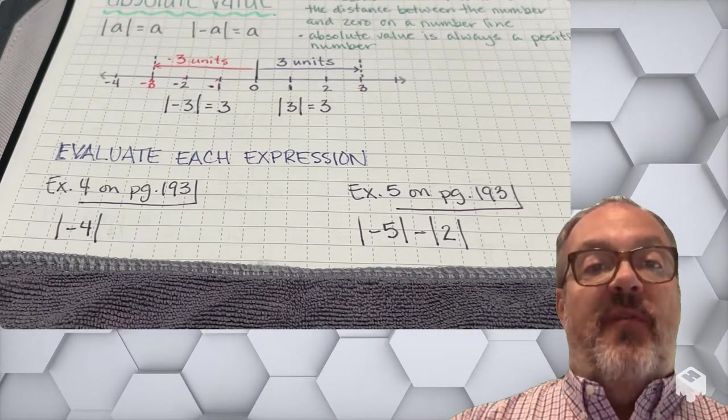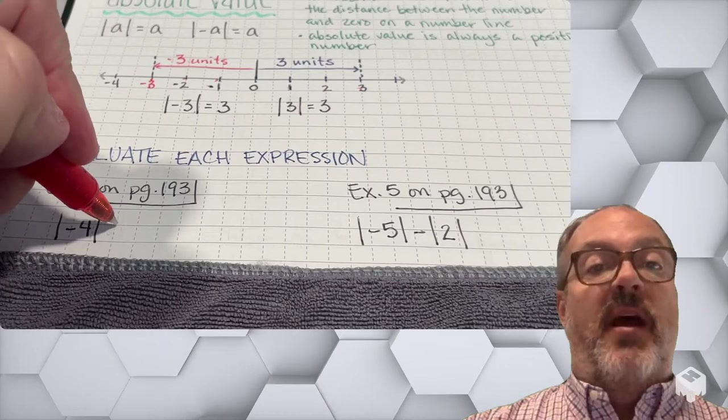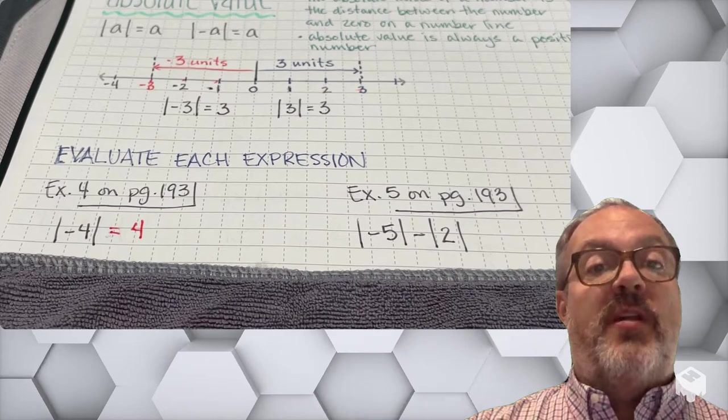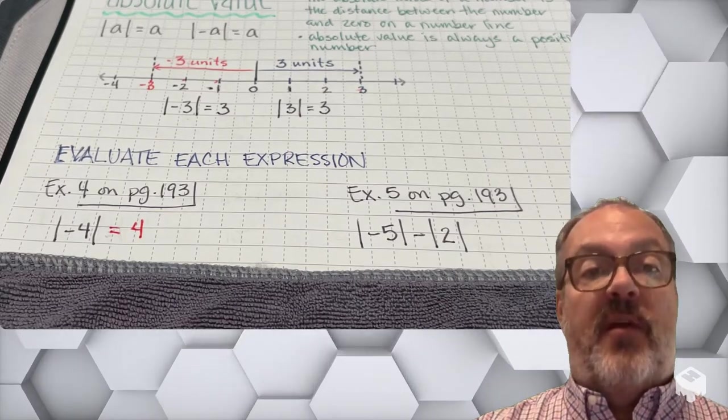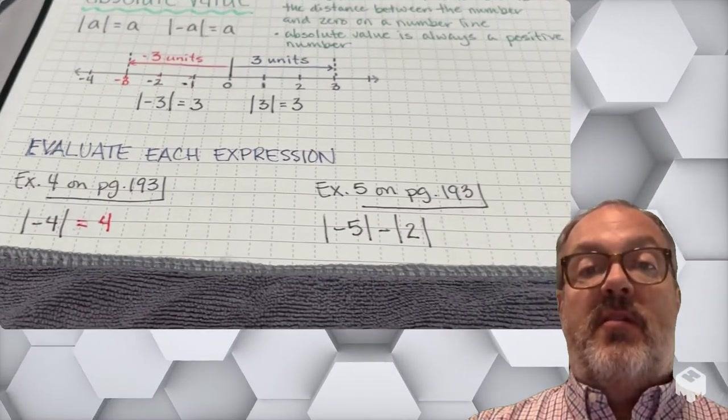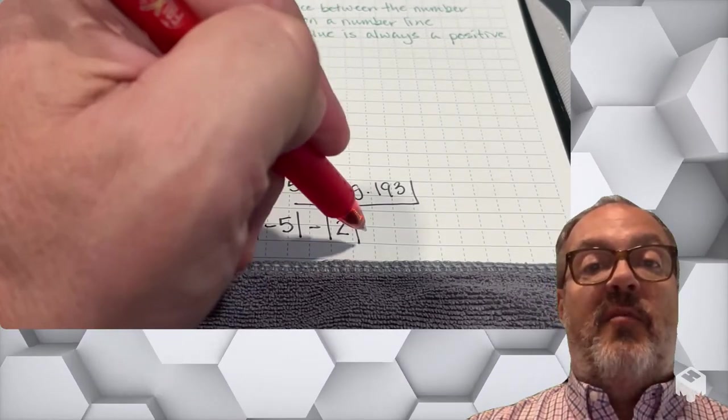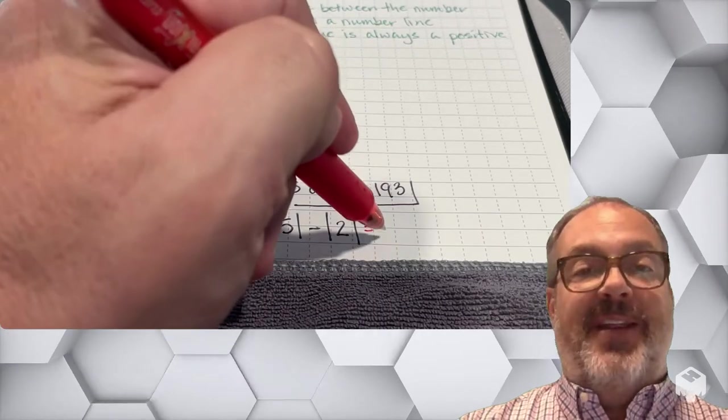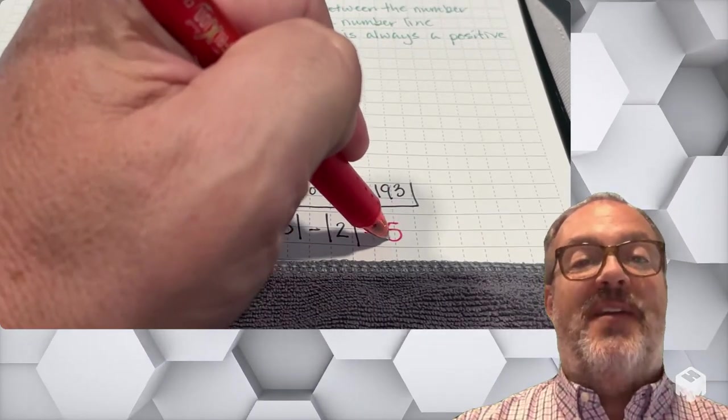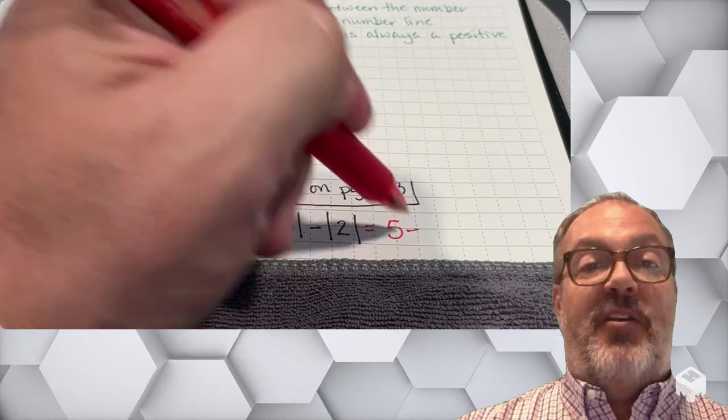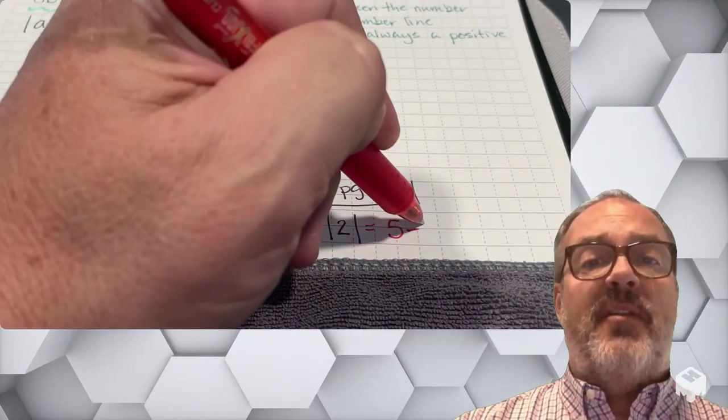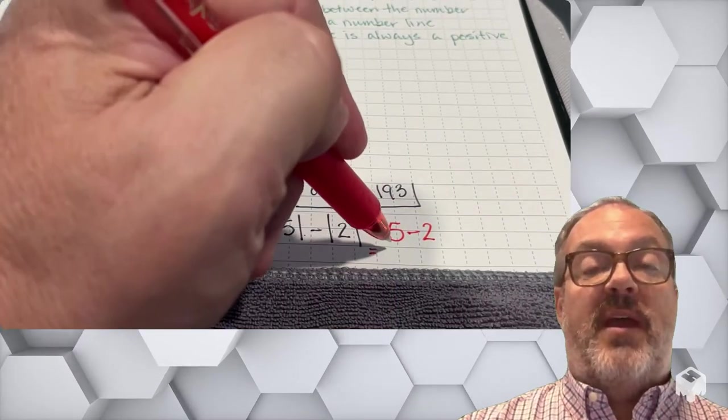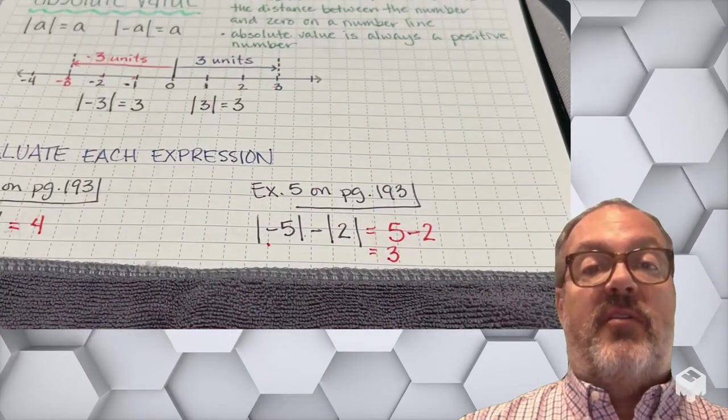All right, let's look at example 4 on page 193. I have the absolute value of negative 4. Well, negative 4 is 4 units away from 0 on the number line. In example 5, I have the absolute value of negative 5 minus the absolute value of 2. The absolute value of negative 5 is 5. I'm going to subtract 2 from that, and I'm going to get 3.